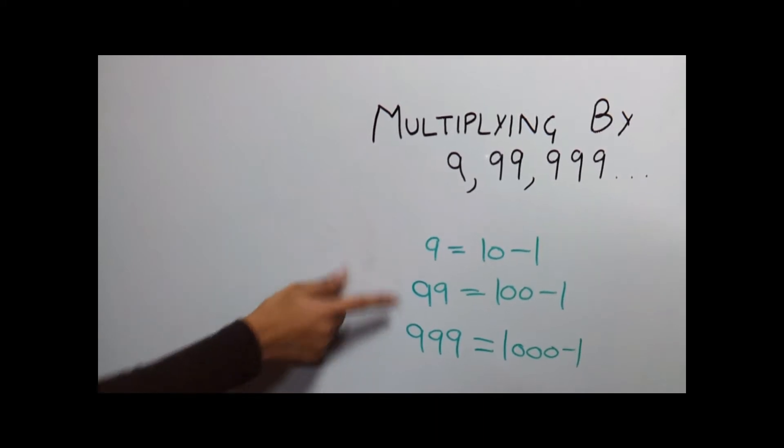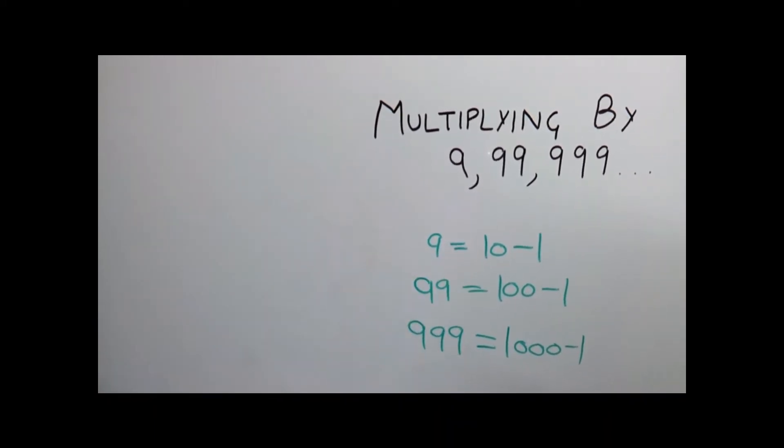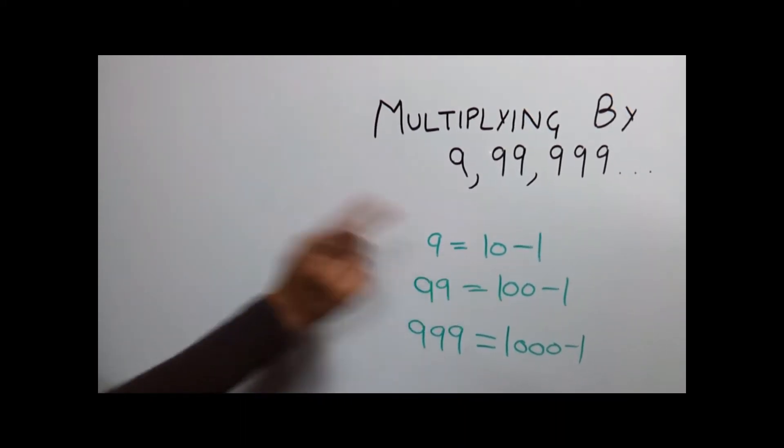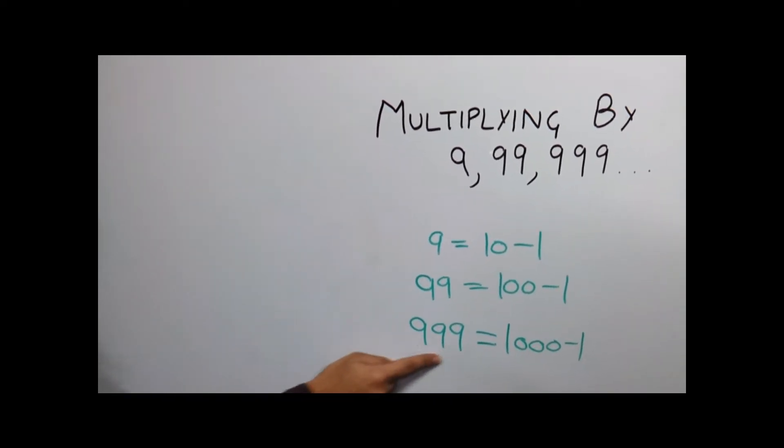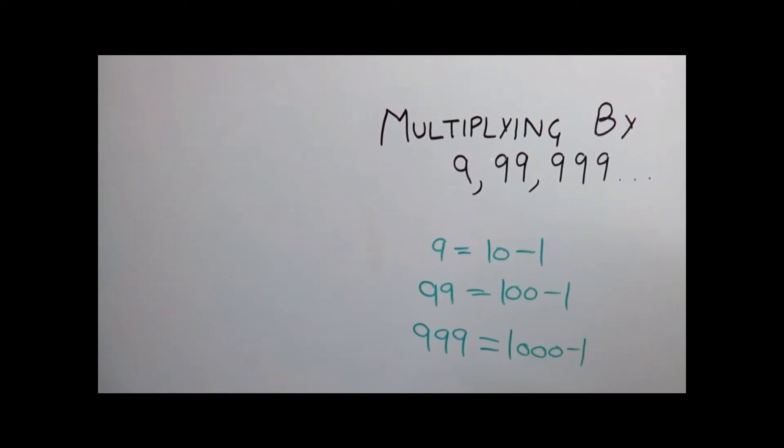In this trick we can write 9 as 10-1, double 9 as 100-1, triple 9 as 1000-1 depending on the base value of the number. Now let's understand the concept of this trick.